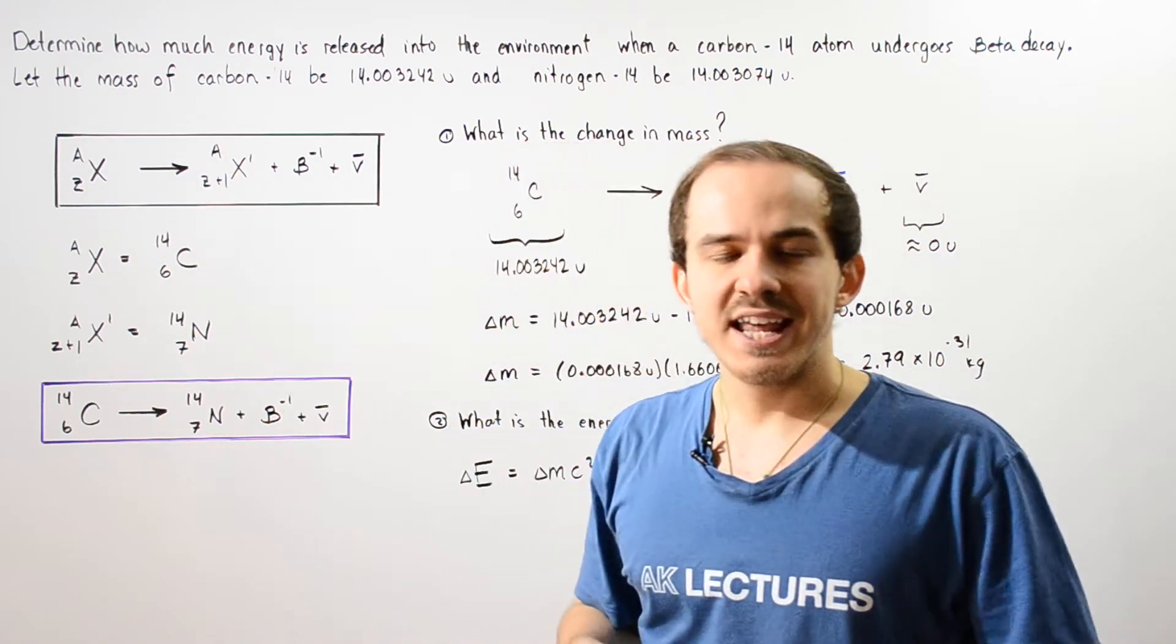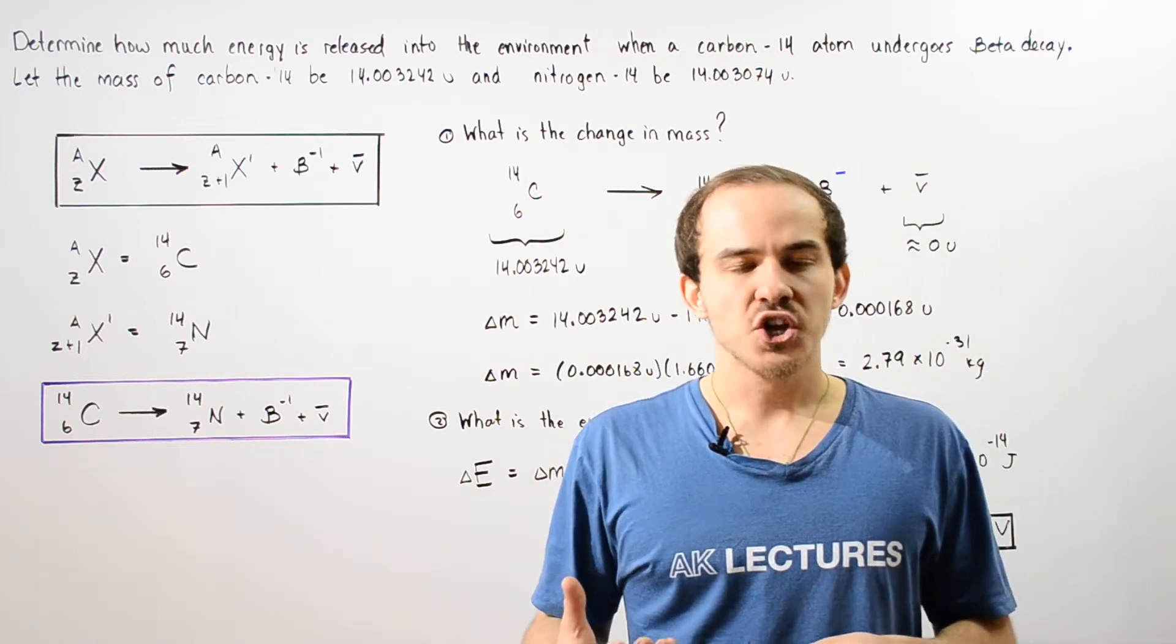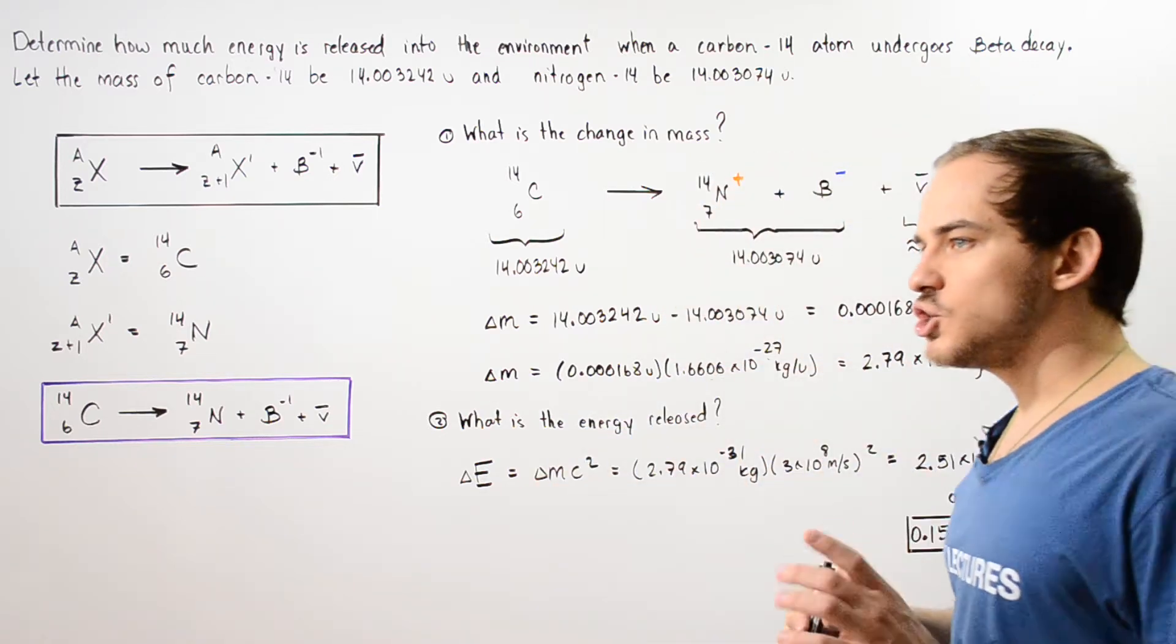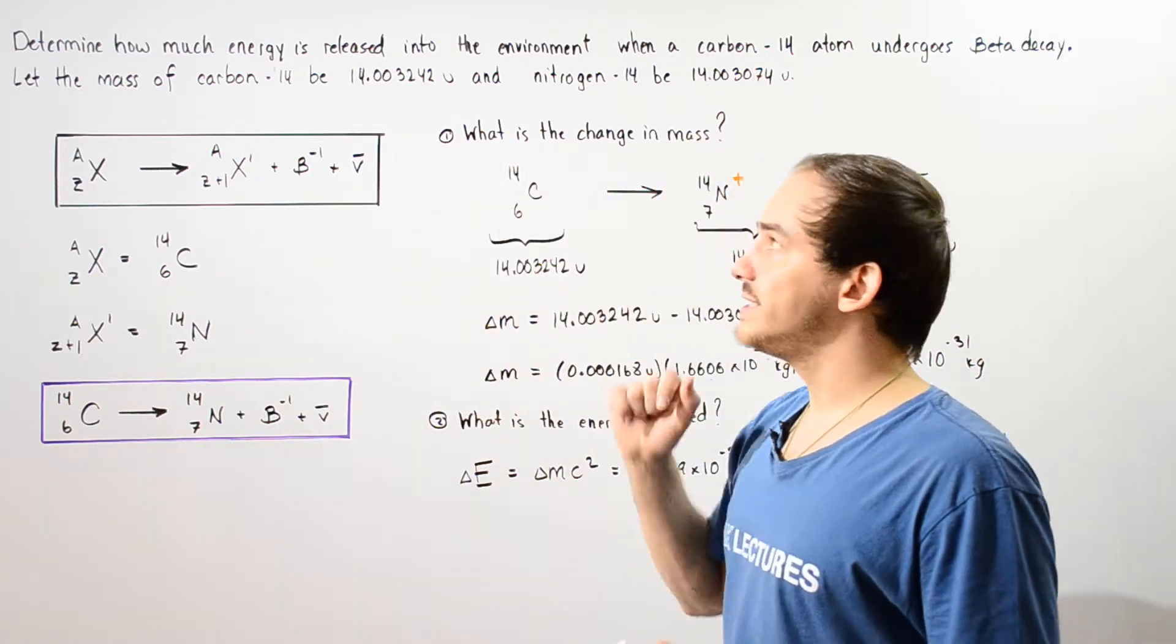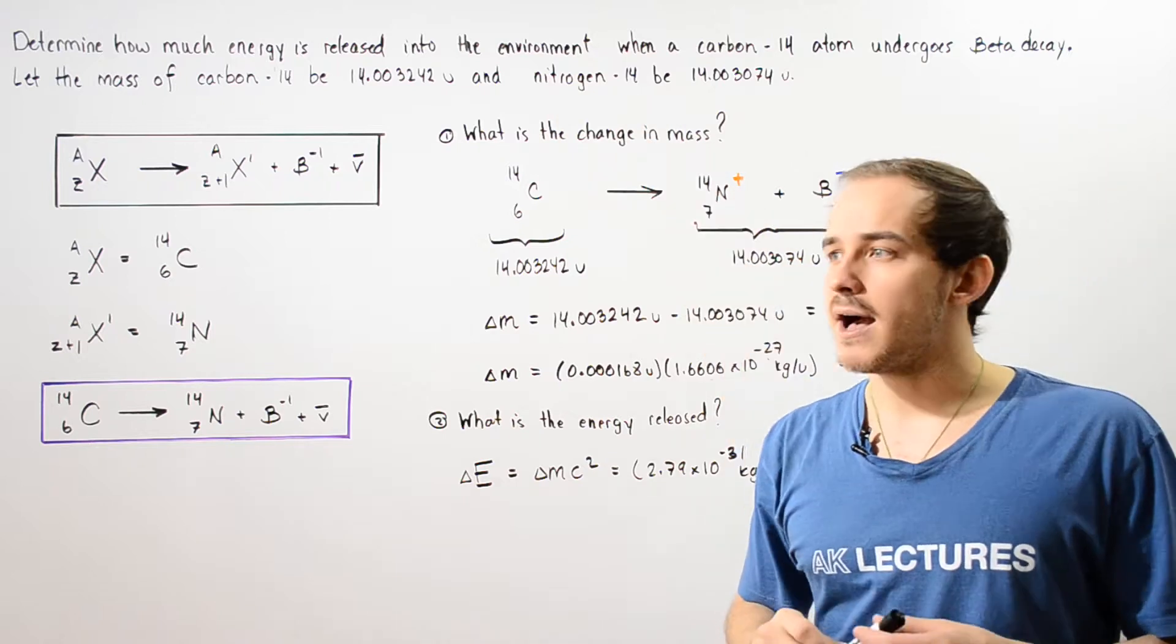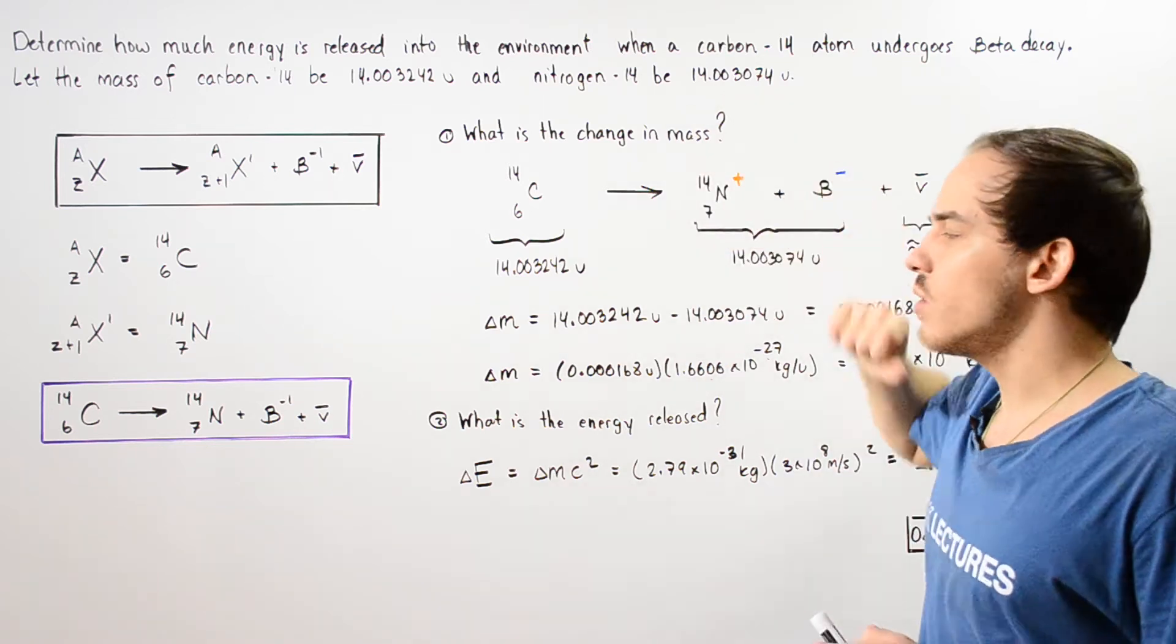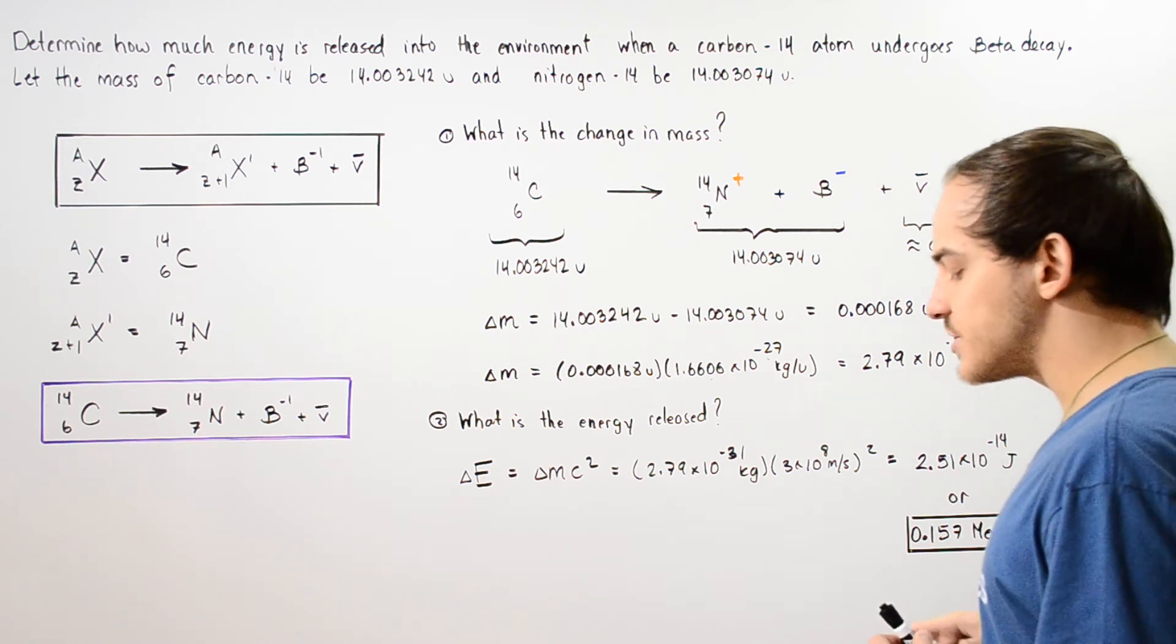Determine how much energy is released into the surroundings when a neutral carbon-14 atom undergoes beta decay. Let's assume that the mass of the neutral carbon is 14.003242 unified atomic mass units and the mass of our neutral nitrogen-14 is 14.003074 unified atomic mass units.